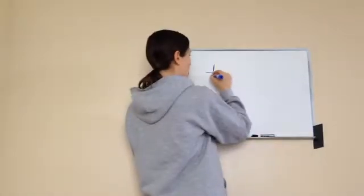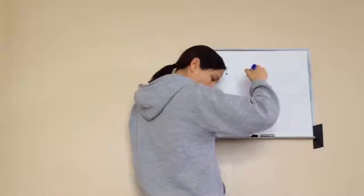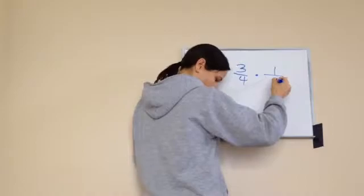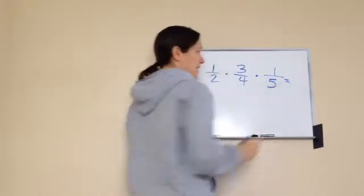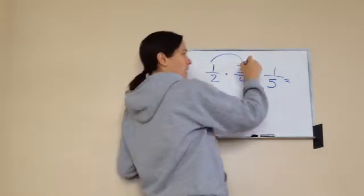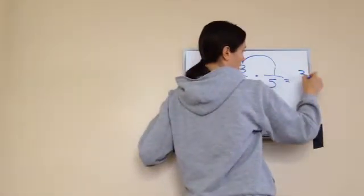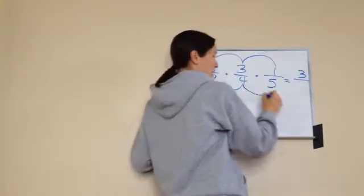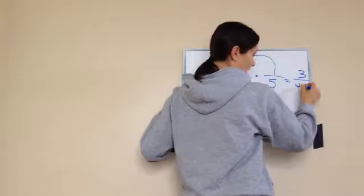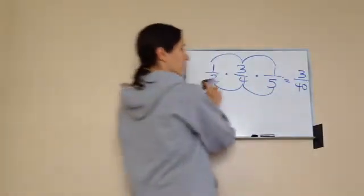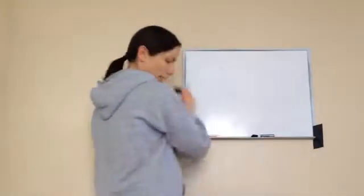Now, let's look at this. Now, this doesn't make it too much harder, but sometimes you'll have more than two fractions. Sometimes you will have three fractions. And to answer this problem, you would just go 1 times 3 is 3, and 3 times 1 is 3. Then let's multiply the denominators. 2 times 4 is 8. 8 times 5 is 40. And our final answer would be 3/40.